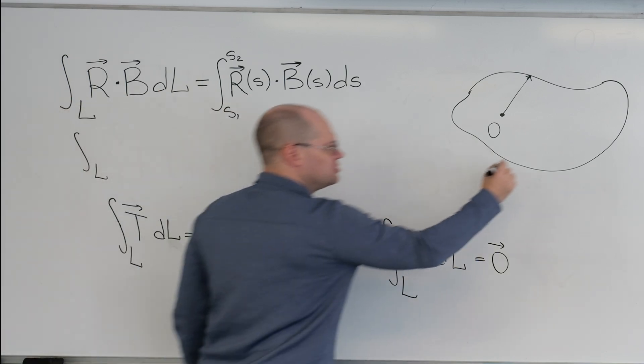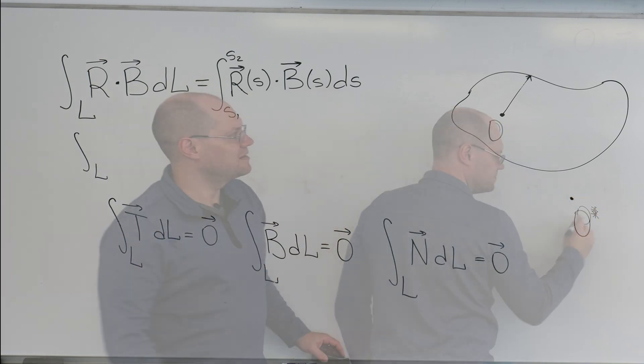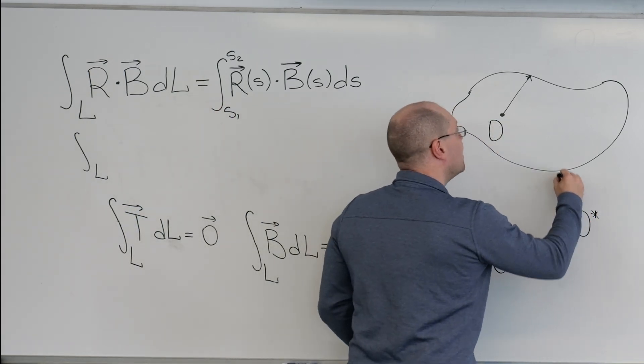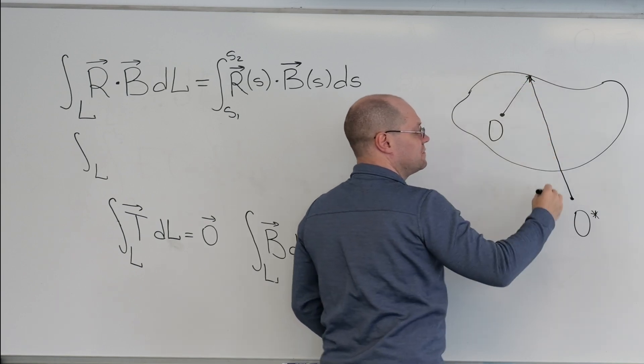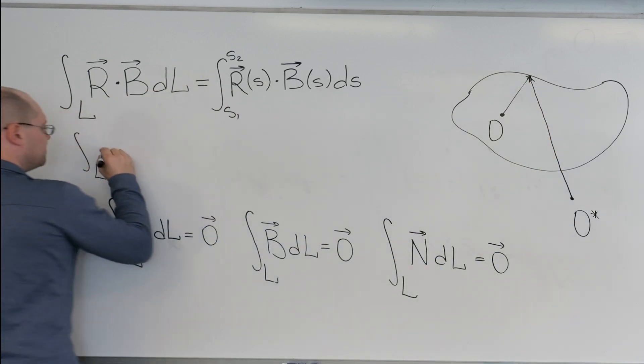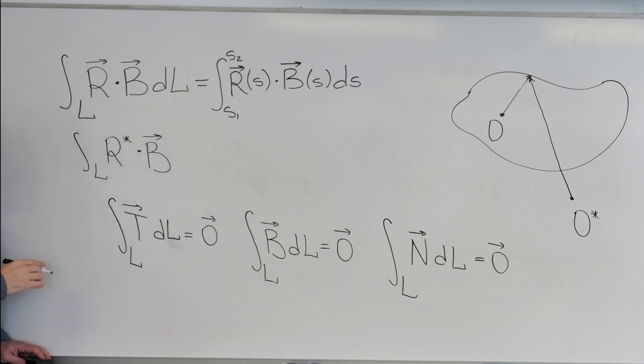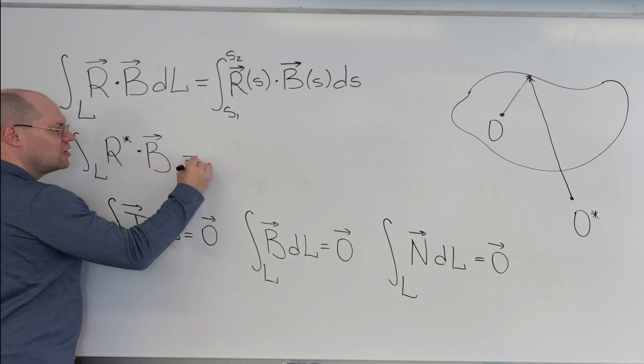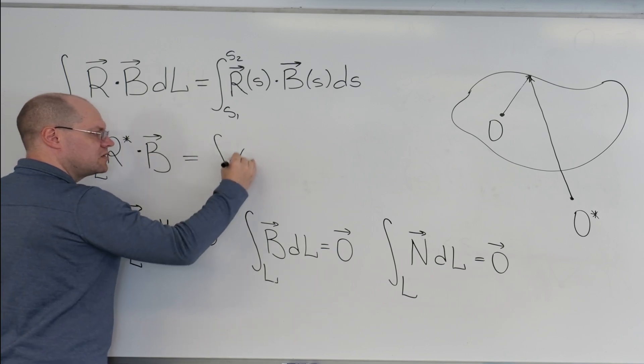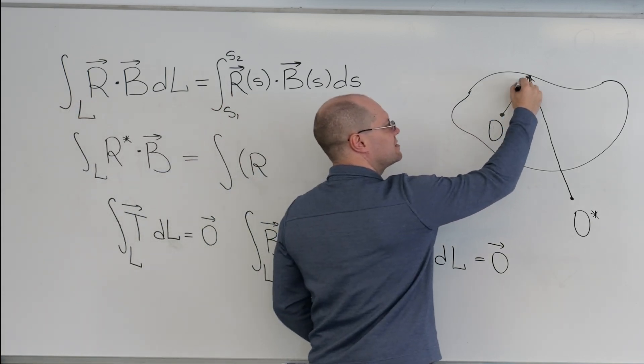I will introduce another O star. If you look at R star, then it will have a position vector field that's different, and I will denote it by R star. Okay, but notice this: that at every point, R star equals R, which is this vector, plus this vector.